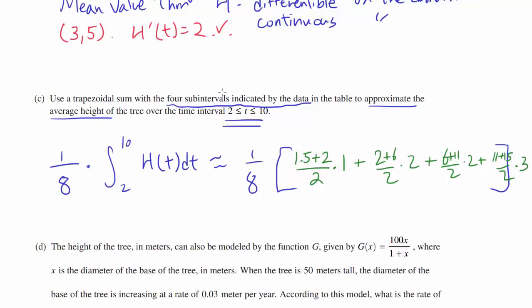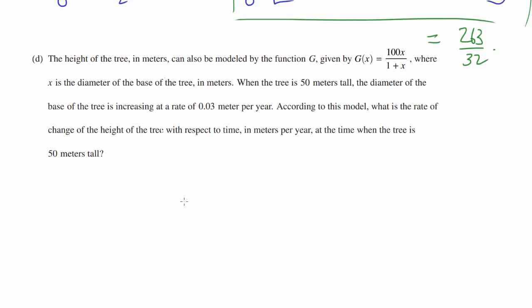On the AP test, you don't have to simplify the numerical answers. So if you leave your answer like this, you should get full credit. Once you have this, you're done. But if you really want to simplify, it's equal to 263/32. But just leaving it like this should get you 100% of the points. Let's go on to part D.